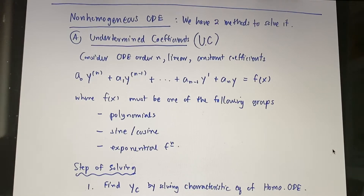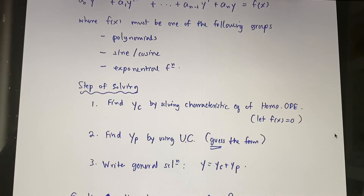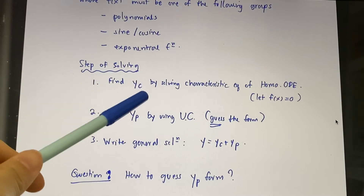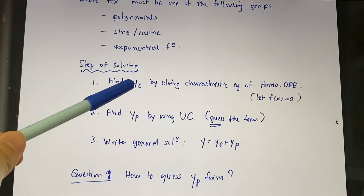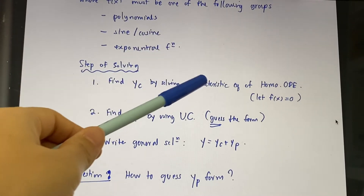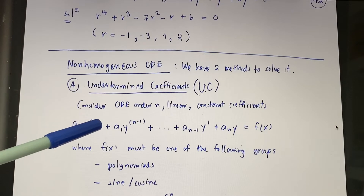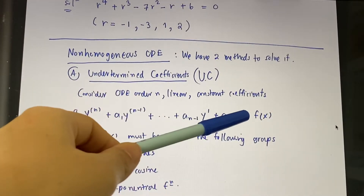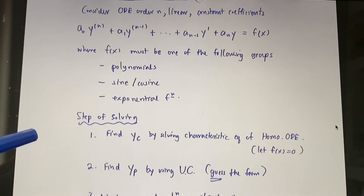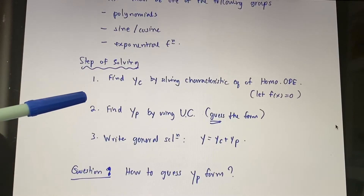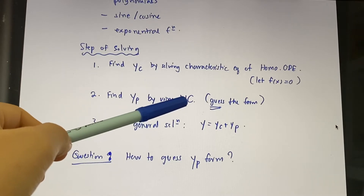Here is a summary of the steps for finding the solution. First, you need to find yc — the complementary solution. You get this by solving the characteristic equation of the homogeneous form, meaning you set f(x) equal to zero and solve just like before. After you know yc, you can find yp using the undetermined coefficient method.